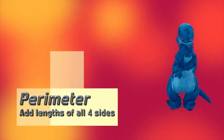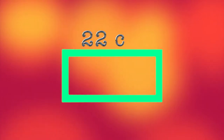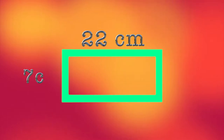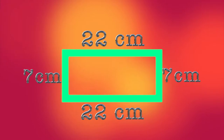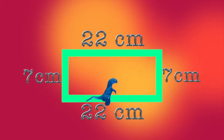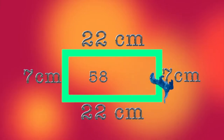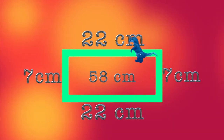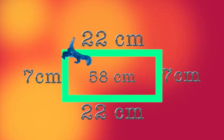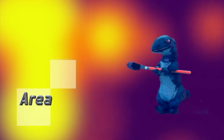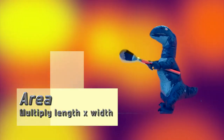To find the perimeter of a shape, you add up all the measurements of all the sides. This rectangle measures 22 centimeters on the long side and 7 centimeters on the short side. Since it is a rectangle, we know the sides across from each other are the same. When you add up all four numbers, your sum equals the perimeter — that's the distance Shape-a-saurus would have to walk along the edge all the way around: 58 centimeters.